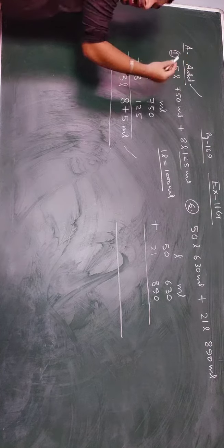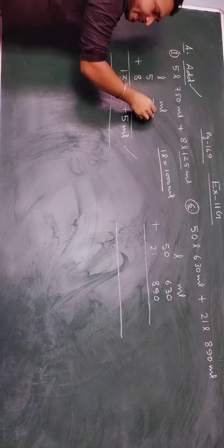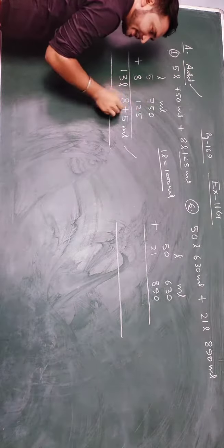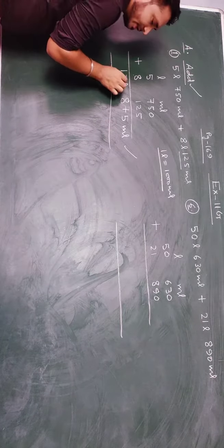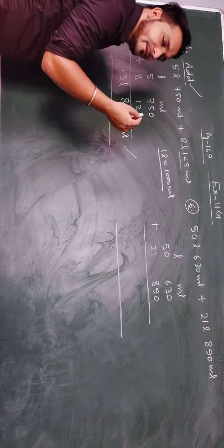What is the question, add them, so add them. 0 plus 5 is 5, 5 plus 2 is 7, 7 plus 1 is 8 and 8 plus 5 is 13. So 13 litre, 875 milliliter.